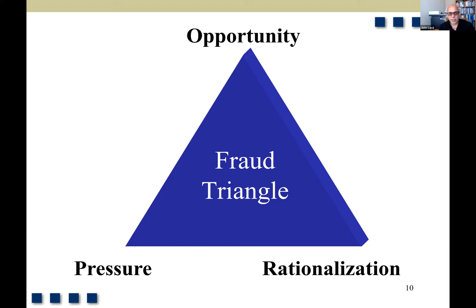Rationalization is saying, 'Hey, I deserve this thing that I'm stealing. So-and-so got a big bonus; I got left out, so I'm going to steal $10,000 to make up for that.' Opportunity is really poor internal controls. Even in an audit, we are required to look at certain risks and assess whether they are leading to some potential for fraud. That risk — opportunity — is looking at internal controls and seeing if there's a problem that could lead to some sort of embezzlement or fraud.